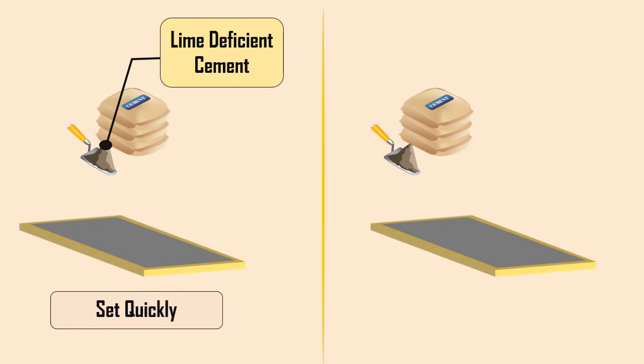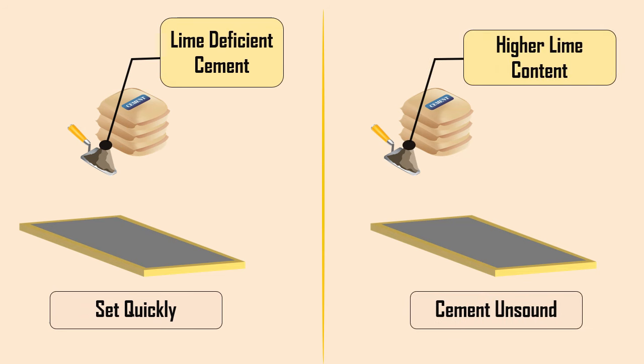As a result, lime-deficient cement will set quickly, while a higher lime content will render the cement unsound, affecting the cement work quality.